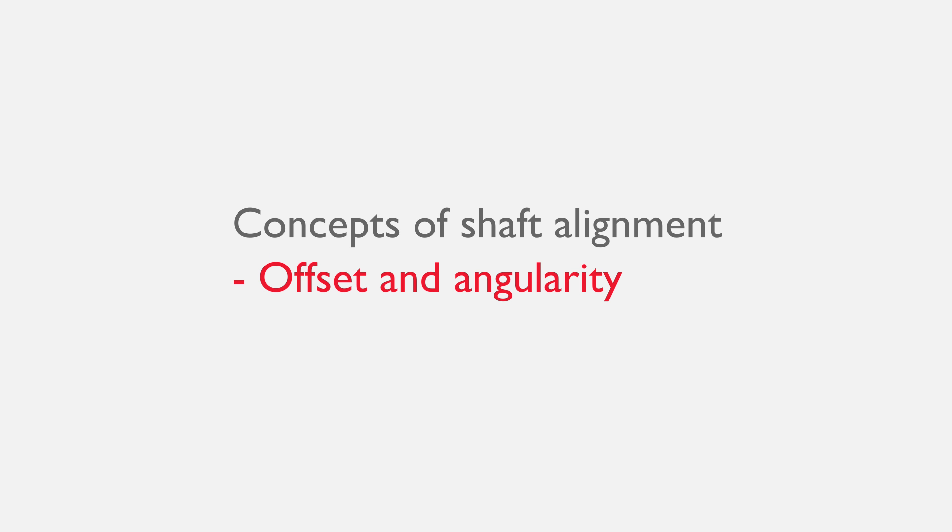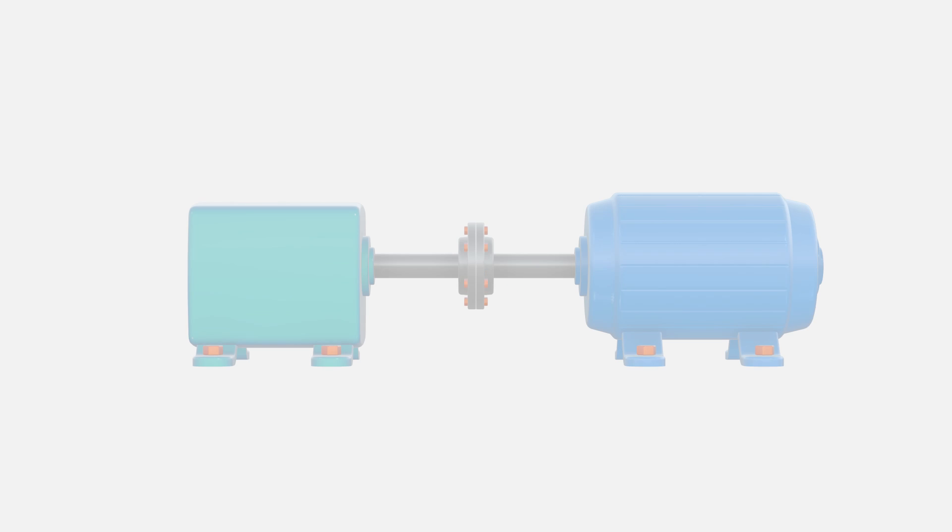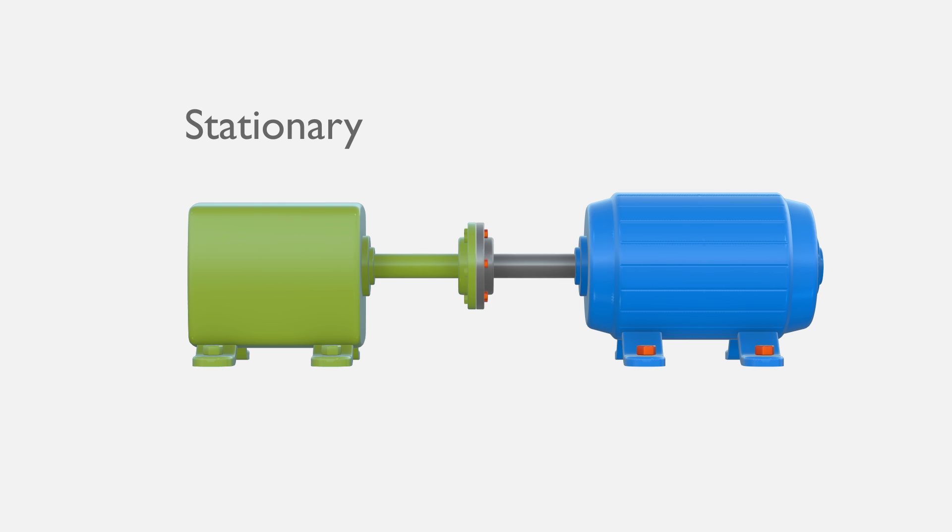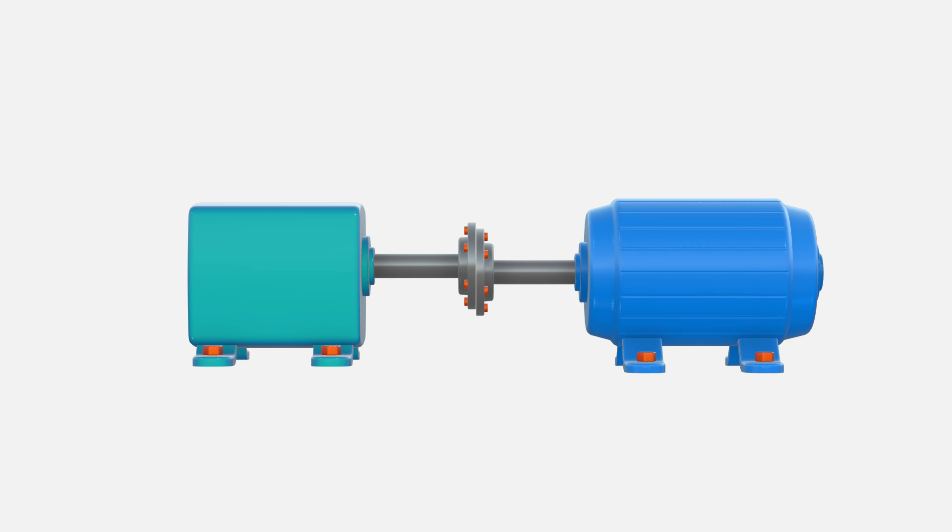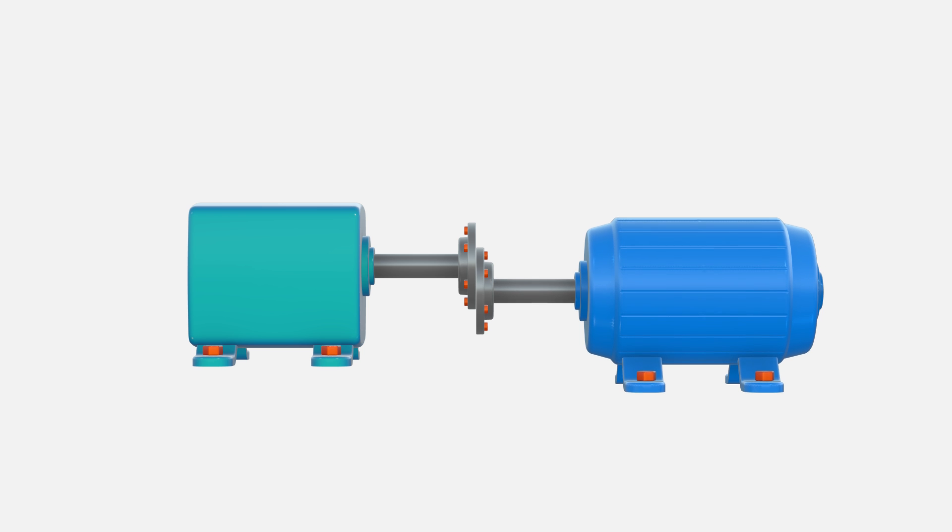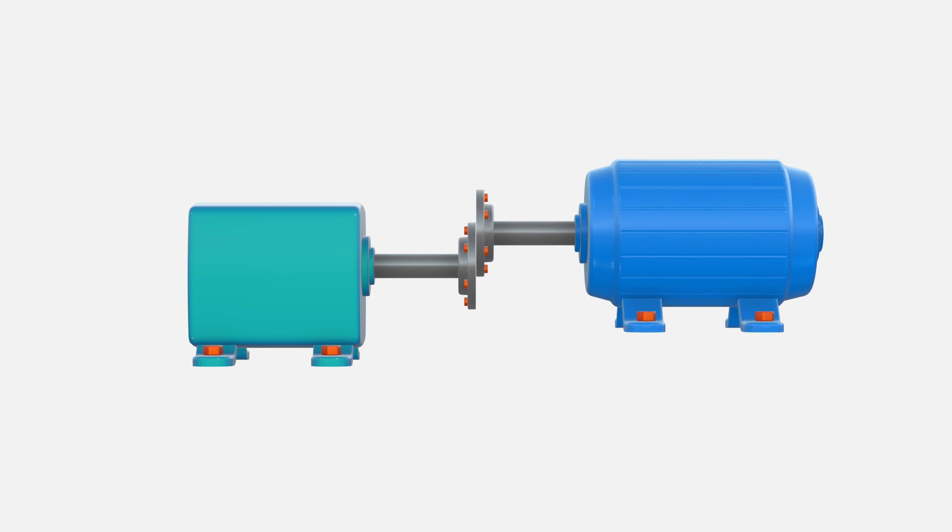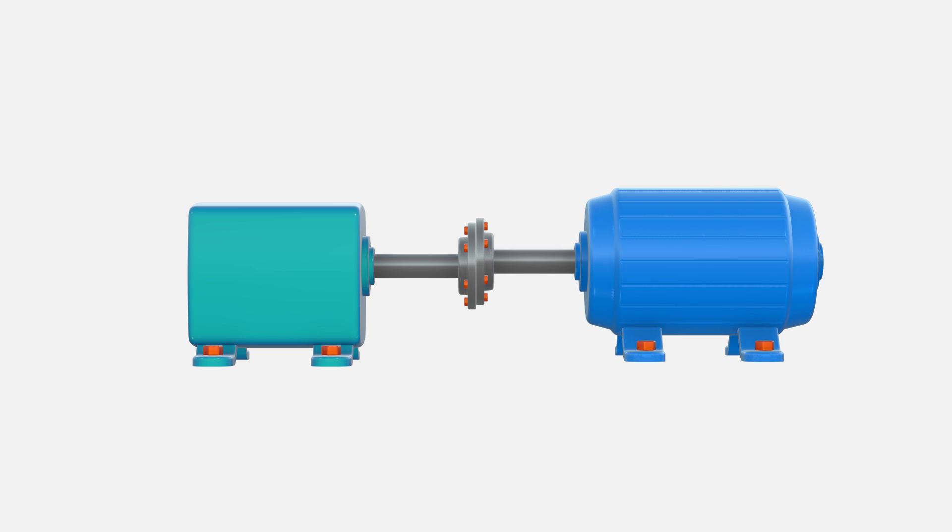Concepts of shaft alignment: Offset and angularity. In shaft alignment, the shaft of the driven machine is typically considered stationary, while the other, the shaft of the driver, is movable. The movable shaft is adjusted in relation to the stationary shaft to bring both shafts into alignment and to satisfy machinery alignment tolerances.